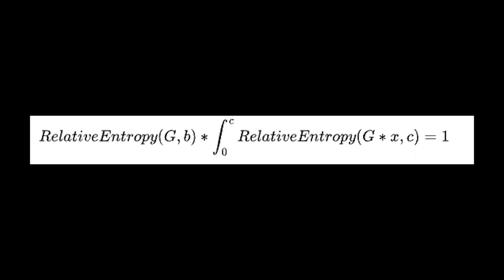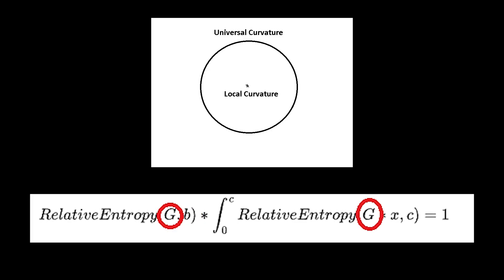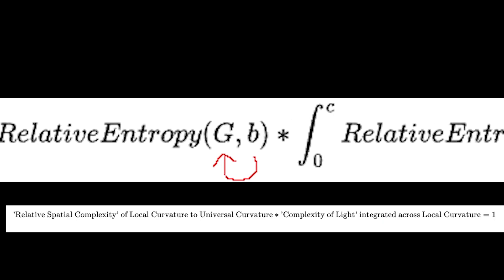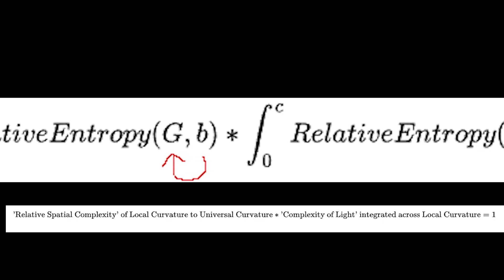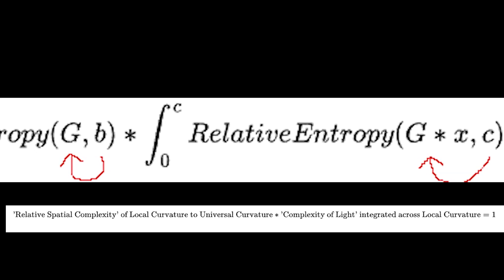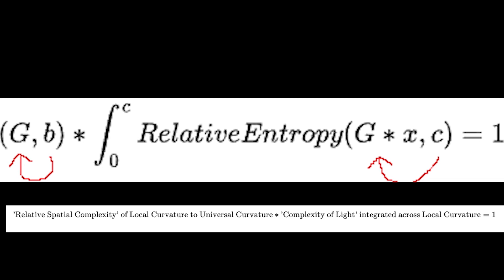In this equation, I propose that it describes the quantum probability information flow between different levels of momentum between universal curvature, local curvature, and light. There's a flow from the complexity of universal curvature, that being b, to the complexity of local curvature, that being g, and it's balanced by the flow from light, being c, to local curvature, g, again.